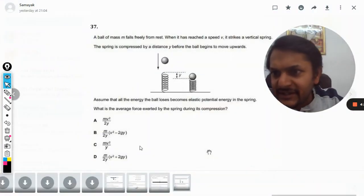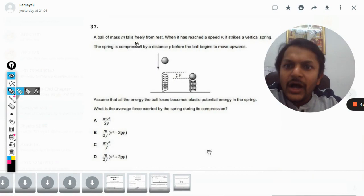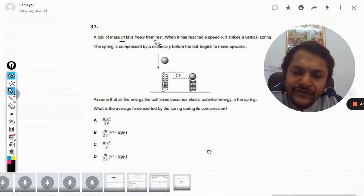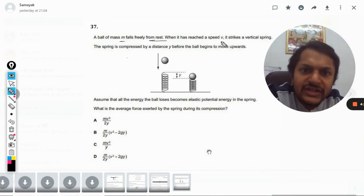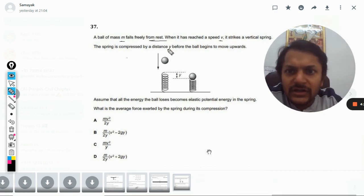Okay dear students, let us see what is there in this question. A ball of mass m falls freely from rest. When it has reached a speed of v, it strikes a vertical spring.